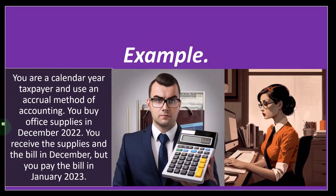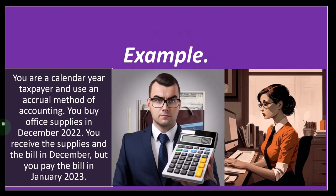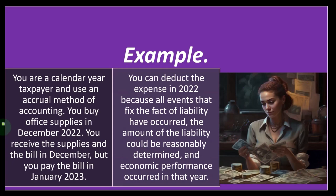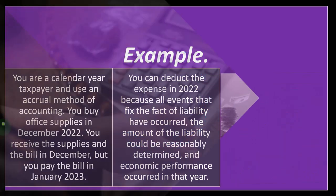Example: you are a calendar year taxpayer using an accrual method of accounting. You buy office supplies in December 2022. You receive the supplies and the bill in December, but you pay the bill in January 2023. You can deduct the expense in 2022 because all events that fix the fact of liability have occurred, the amount of the liability could be reasonably determined, and economic performance has occurred.